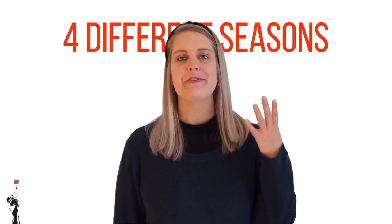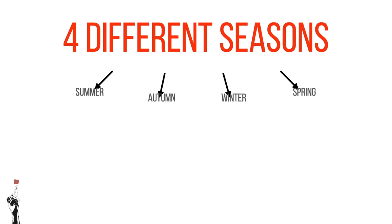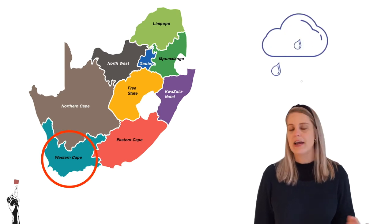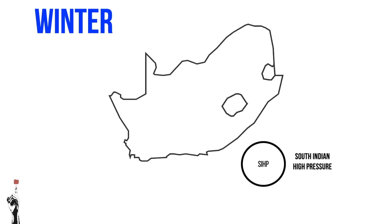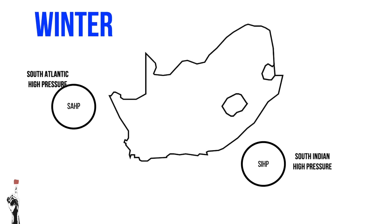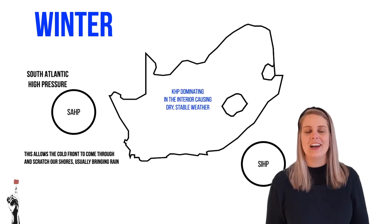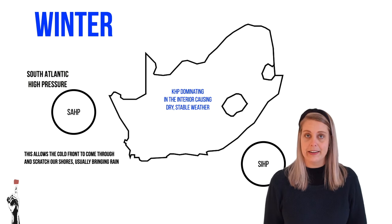Throughout the year we experience four different seasons and the main pressure cells move accordingly. While we know generally that in winter an area will be cold, we cannot say that it will necessarily be rainy. We know Cape Town gets a lot of rainfall in winter, but the same cannot be said for all places. In winter, the high pressure cells move further north. This allows the cold front to move upwards and come through, usually bringing rainfall — specifically to Cape Town or the Southwest Cape. One can also notice the Kalahari high pressure over the interior of South Africa because it's winter.